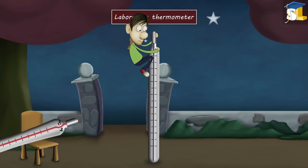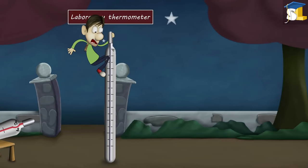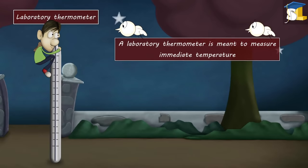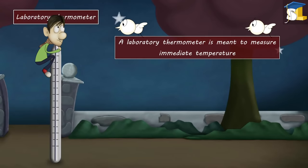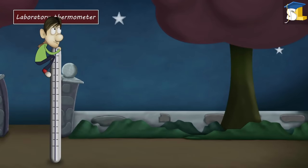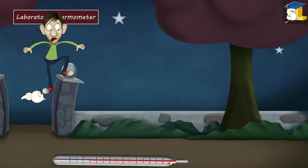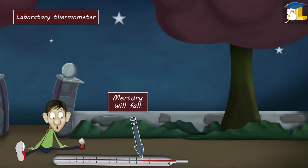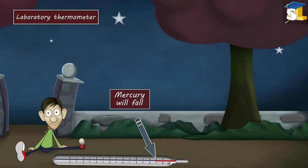Now, in a laboratory thermometer, this kink is absent. This is because a laboratory thermometer is meant to measure immediate temperature. Hence, after recording our body temperature, until we check it, the mercury will fall, thus not giving us an accurate reading.